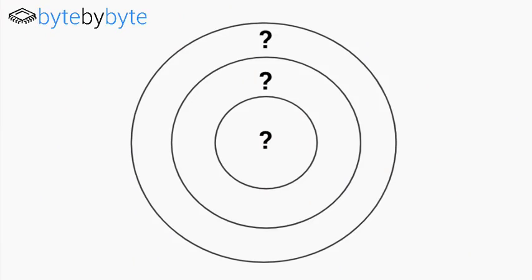I want to give you this framework of the three concentric circles that you can use as you're preparing. When you're preparing, you want to start with the core data structure — this is in the innermost circle. You're going to start with just that core data structure. That means, let's say we were talking about lists: you would understand what a list is, how that data is arranged, what the classes look like, how everything is actually structured and how that's stored. This is the innermost section because without knowing that, we don't know how to operate on that data.